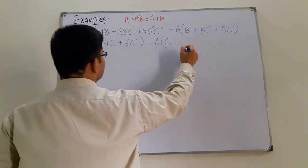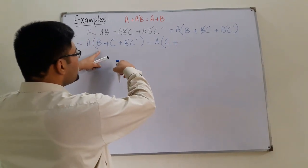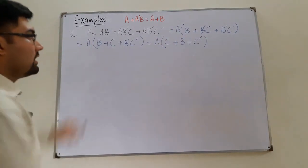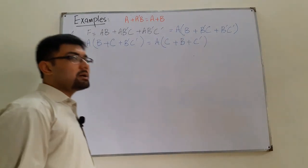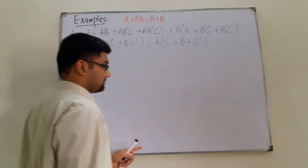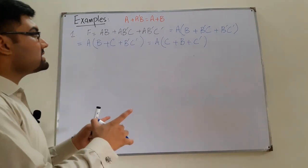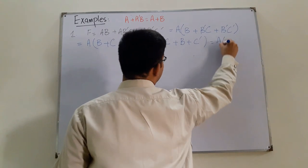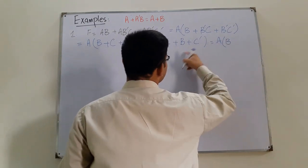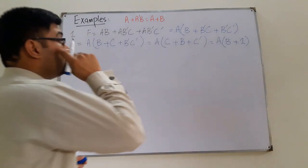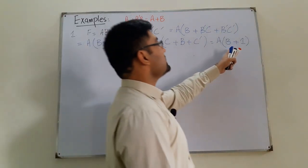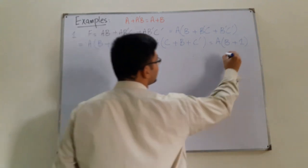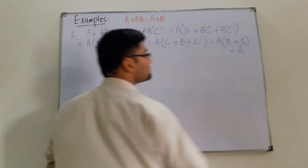Now we have B + C + C'. C + C' equals 1, since 0+1=1 and 1+0=1. So we get B + 1, and anything OR'd with 1 is 1. So B·1 = 1, and the whole expression simplifies to just A.